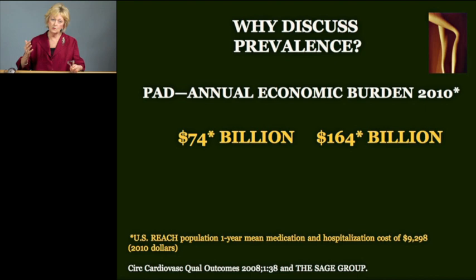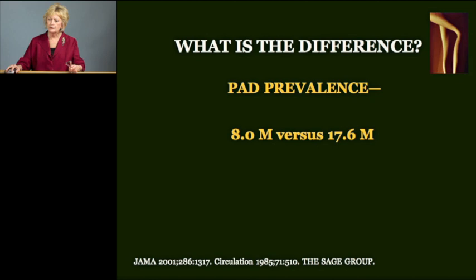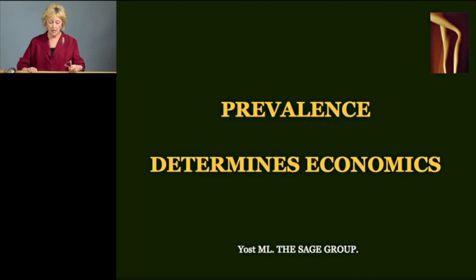So to start with, why even discuss prevalence? Well, look at these two estimates of the economic burden of PAD. One is 74 billion and the other is 164 billion. What is the difference between these two estimates, other than the obvious that one is over two times greater than the other? Well, the difference is prevalence — how many people have PAD? In one case, 8 million, and in the other case, 17.6 million.